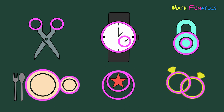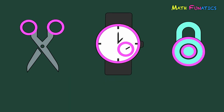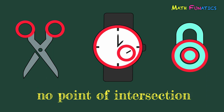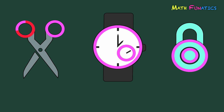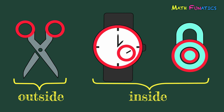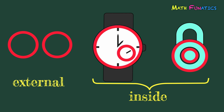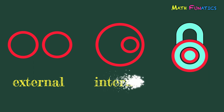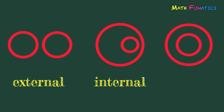Let us analyze each pair of circles in the first three figures. All these pairs of circles do not meet or touch each other, so there's no point of intersection. The two circles on the pair of scissors are located outside of each other. While on the watch and padlock, the smaller circles are located inside the bigger ones. We use the term external if one circle is completely outside the other circle. And if the circles share a common center, we use the term concentric.